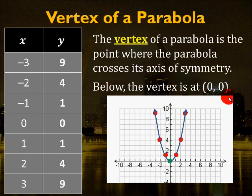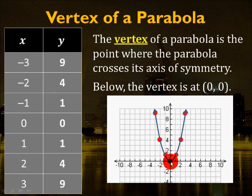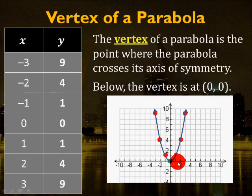The vertex of a parabola is the point where the parabola crosses the axis of symmetry. We know the axis of symmetry is the y-axis. This little green dot here represents the vertex at (0, 0). It will also be the highest or the lowest point of the parabola — basically where it goes from down to up, or up to down.